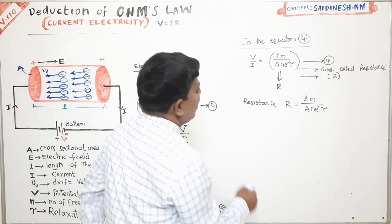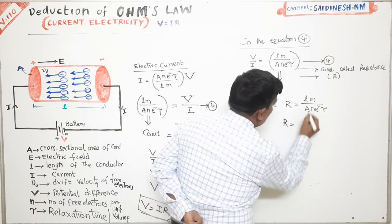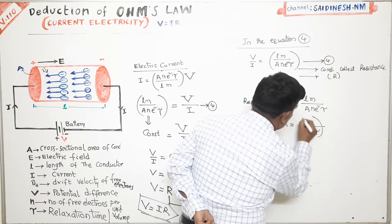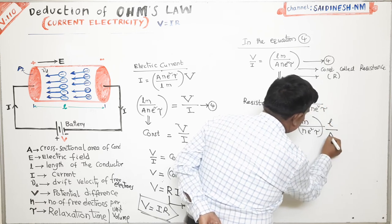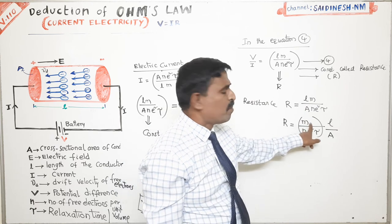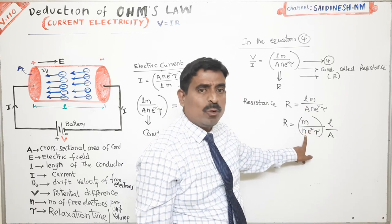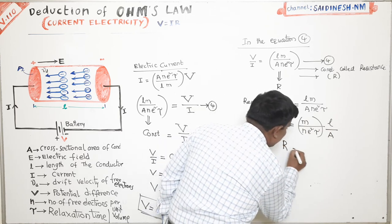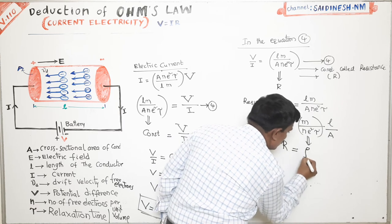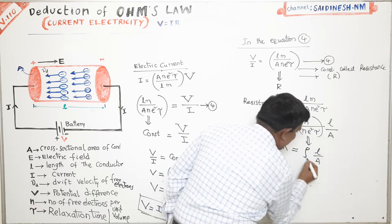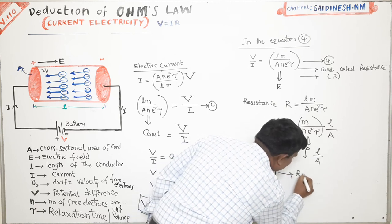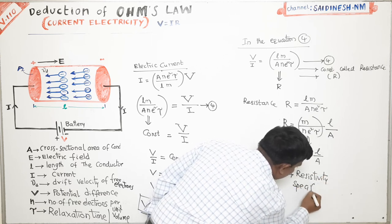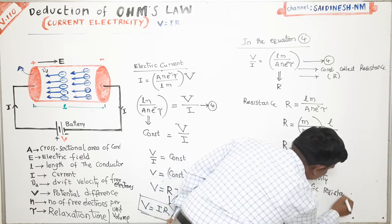From the resistance expression R equals L·m/(A·n·e²·τ), we can write R equals ρ·L/A, where ρ equals m/(n·e²·τ) — a constant for a given material. This constant ρ we call the resistivity of the material, also known as specific resistance.